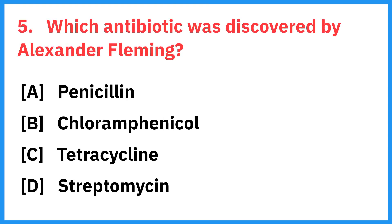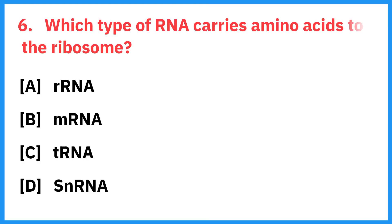Which antibiotic was discovered by Alexander Fleming? Correct answer is penicillin. Which type of RNA carries amino acids to the ribosome? Correct answer is tRNA.